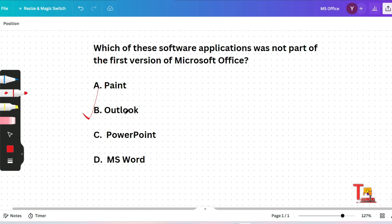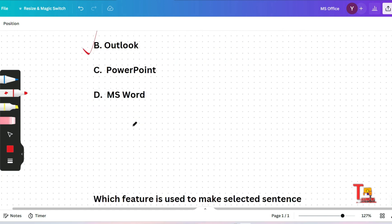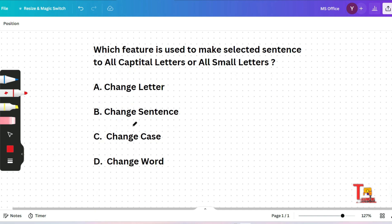Next question is: which feature is used to make selected sentence to all capital letters or all small letters? Change letter, change sentence, change case, or change word. From the options itself you can go with the answer. The correct answer will be change case. You can change all the selected sentence to capital letters or small letters using change case feature in MS Word or in any MS application.